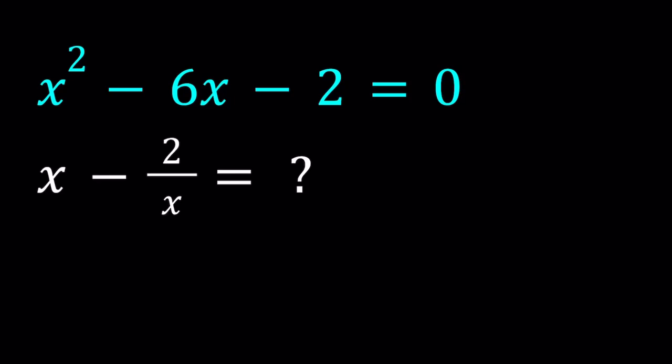Hello, everyone. In this video, we're going to be working with an algebraic expression. We have x squared minus 6x minus 2 equals 0, and we're supposed to evaluate x minus 2 over x.